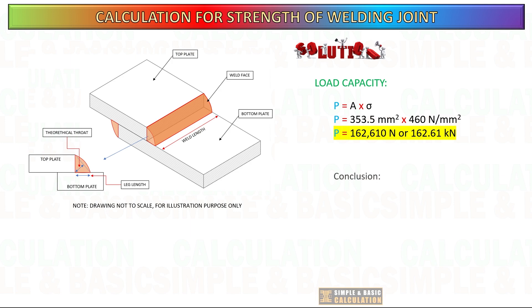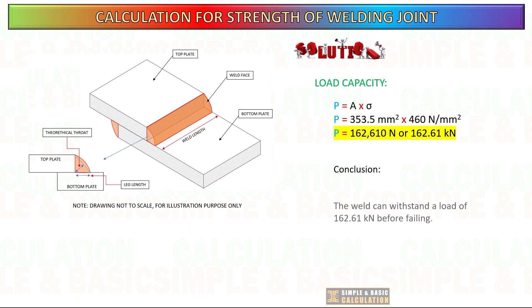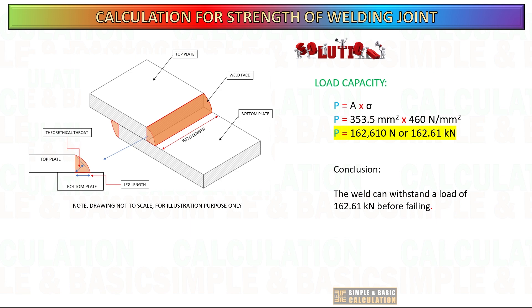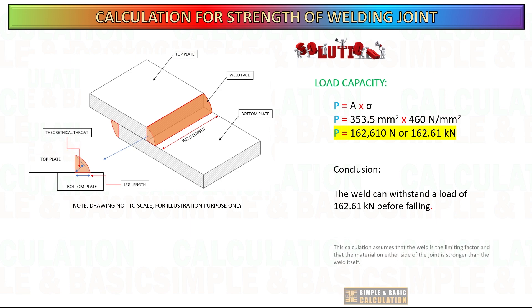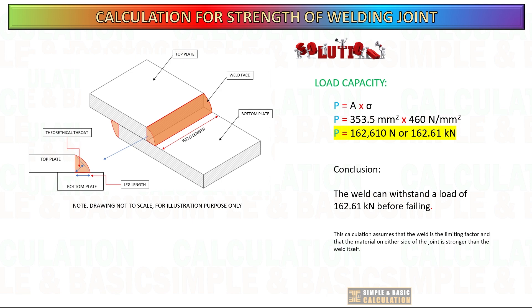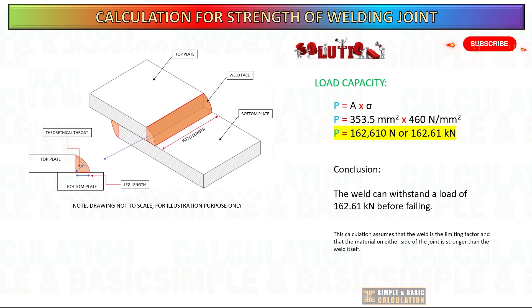Conclusion: the weld can withstand a load of 162.61 kN before failing. This calculation assumes that the weld is the limiting factor and that the material on either side of the joint is stronger than the weld itself.